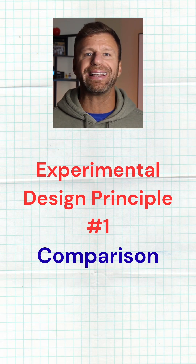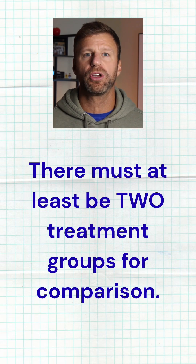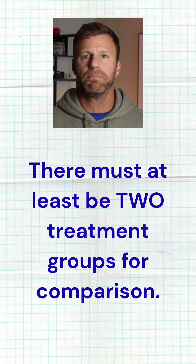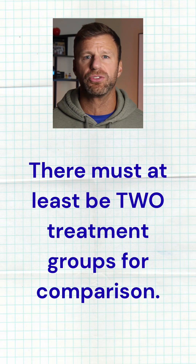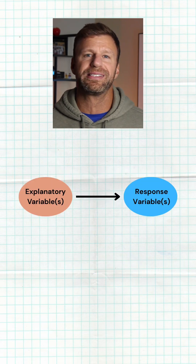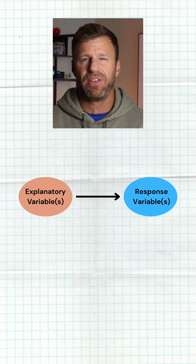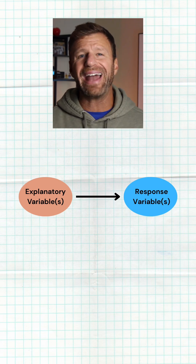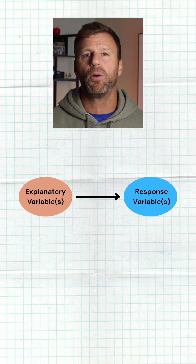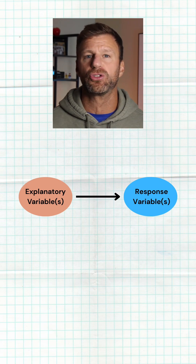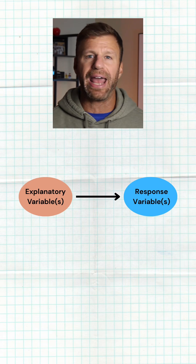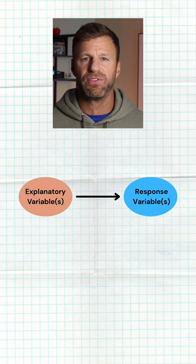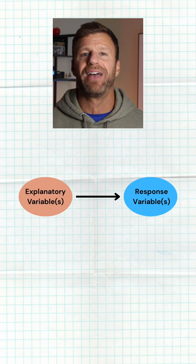You must have at least two treatment groups to compare together to see does one of those treatments make more of an impact on the response variable that you're measuring. The whole point of an experiment is to see does an explanatory variable have some type of impact on a response variable. That explanatory variable must have at least two different treatment groups or levels. You could have three, four, five, or six if you want, but you have to have at least two.